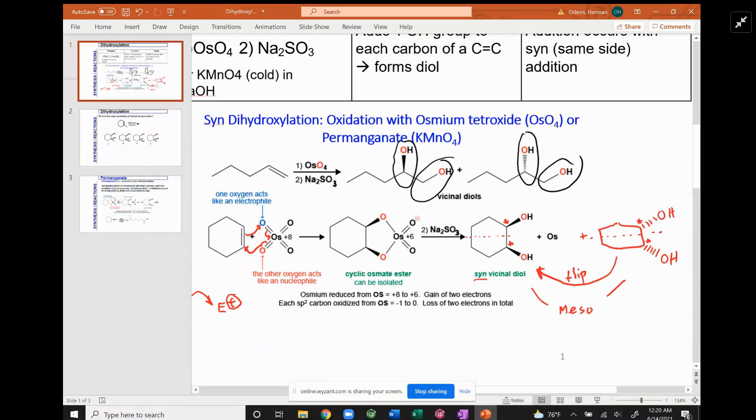Notice that osmium went from valence electrons 8+ to +6 to osmium in its natural state of 0.